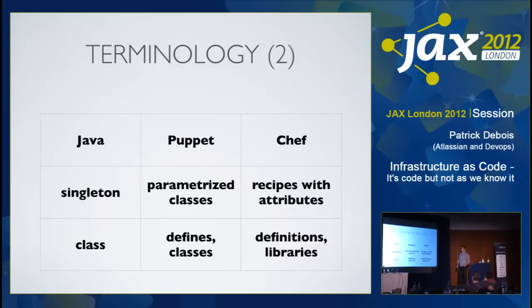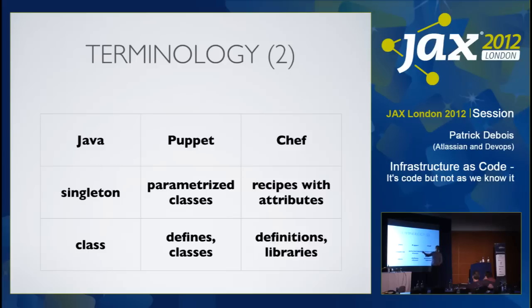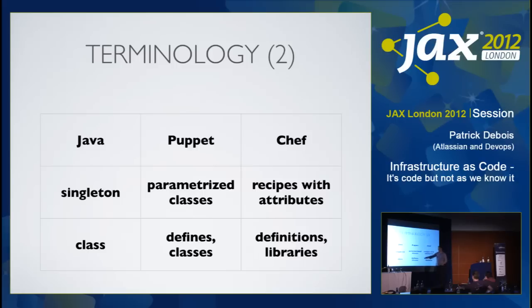If you have a developer background, you'll look for the equivalent of a class. In Puppet, there's something called a parameterized class, but it's actually a singleton — you can only have that class installed once, like Apache. They have a construct called a define, which is more like a class. So you create a concept — instead of saying service Apache 2 and package Apache 2, you make up a new keyword like Apache2_server and abstract that into a defined macro that you can reuse in the language.